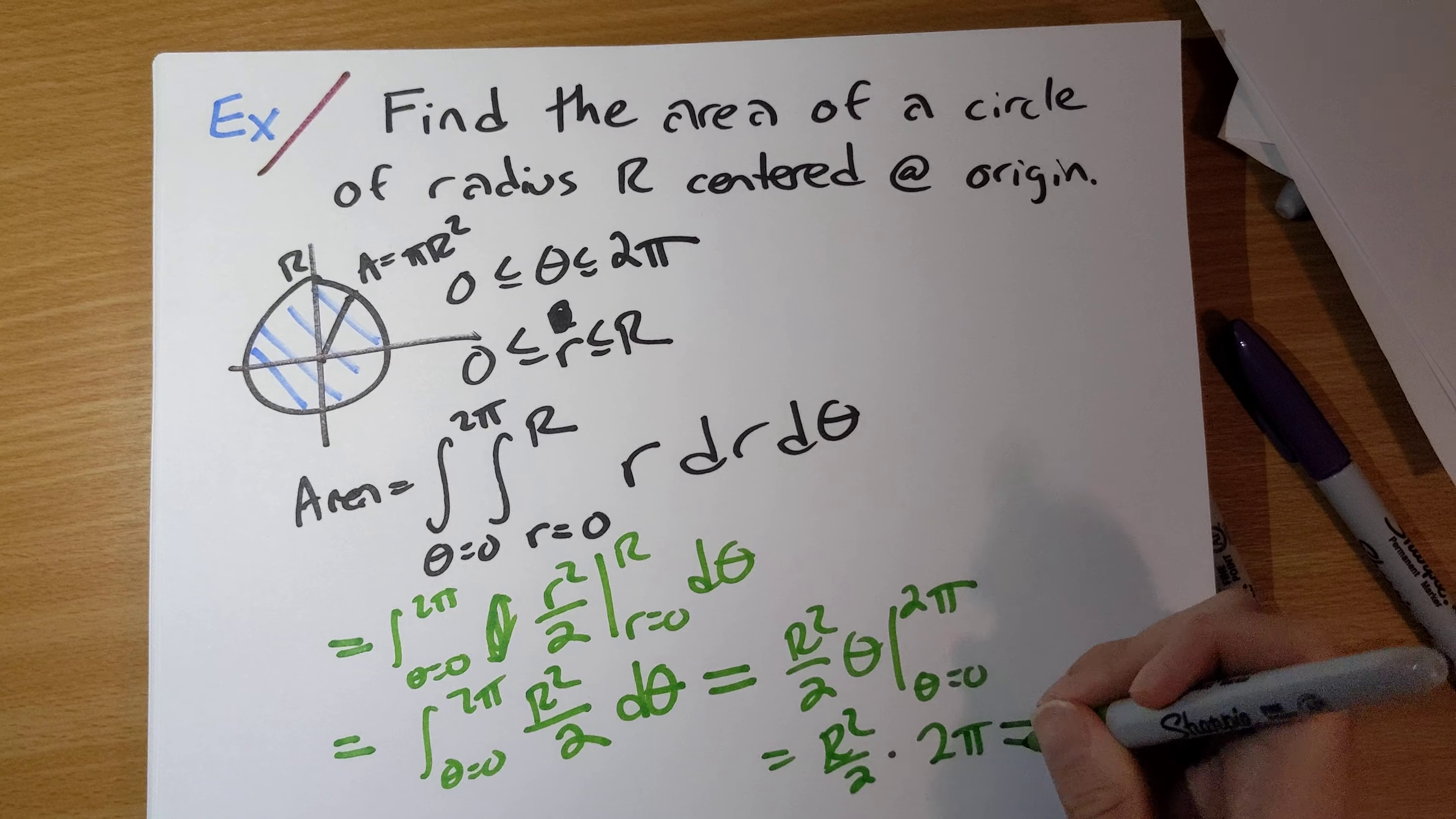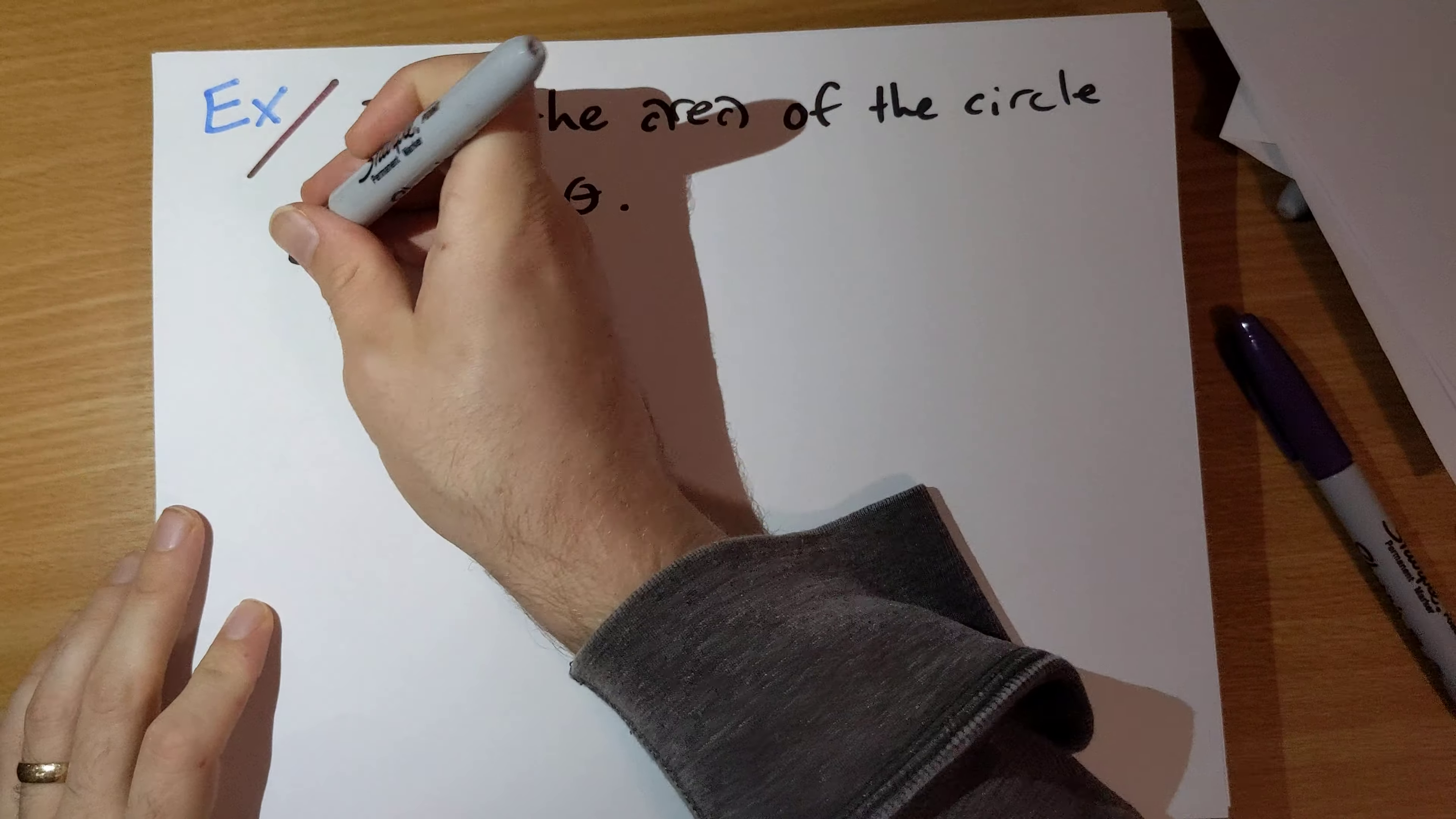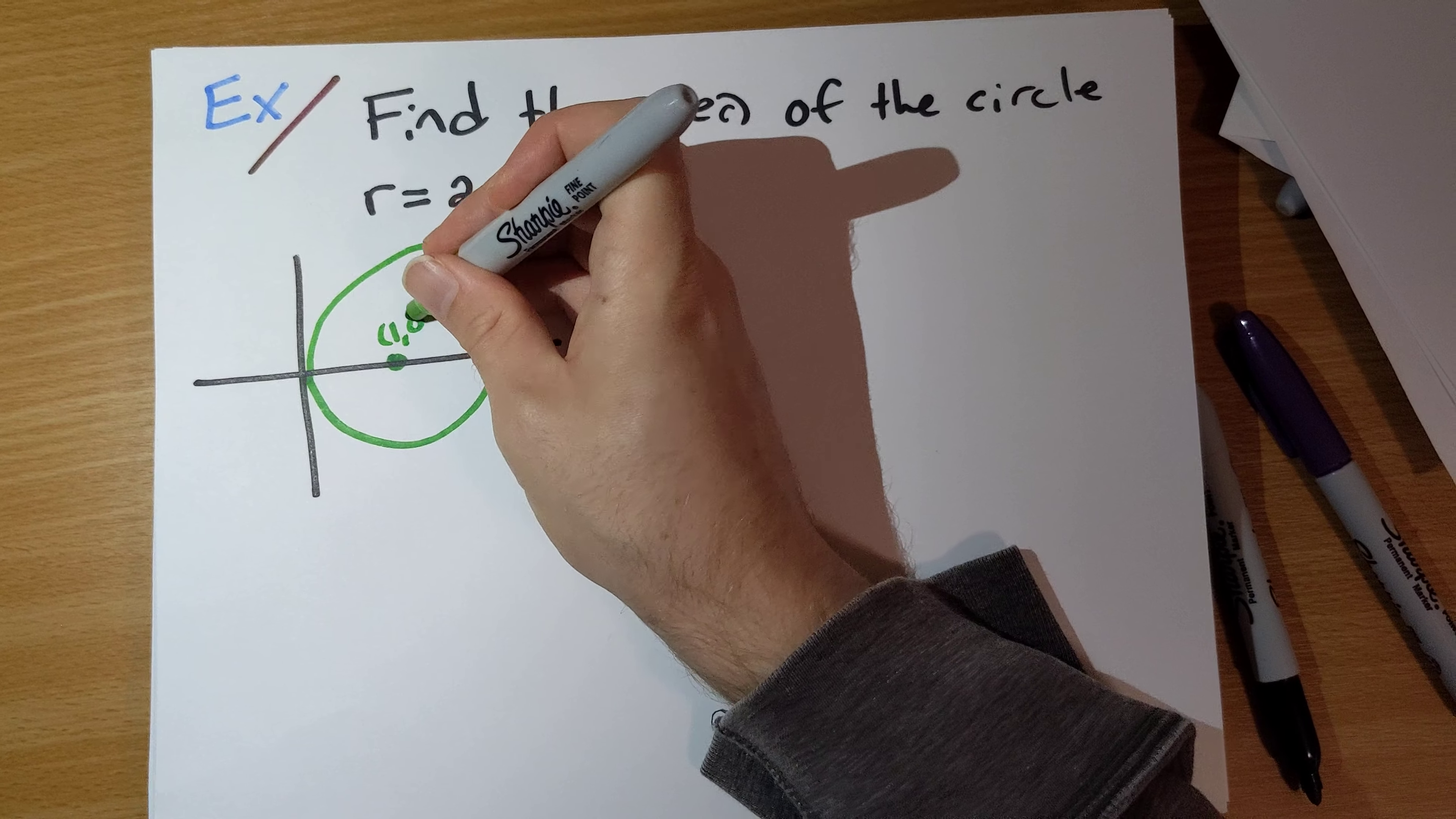So that is one warm-up example. I want to do a second warm-up example. Find the area of the circle r = 2 cosine θ. I think just a couple videos ago we dealt with this. This is a circle of radius 1 that is centered not at the origin but at the point (1, 0).